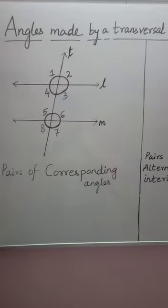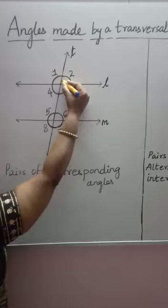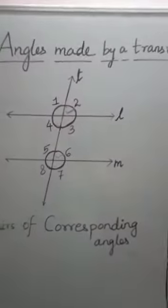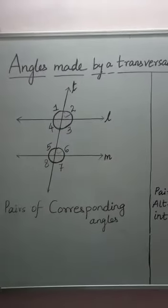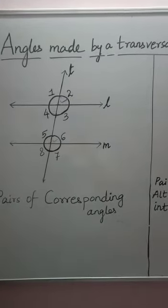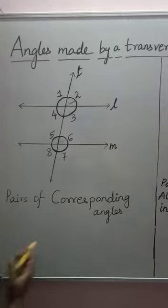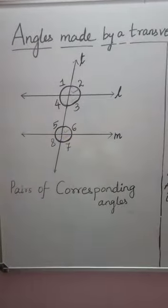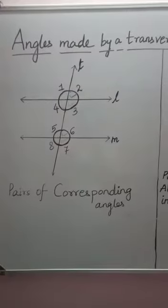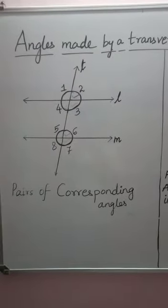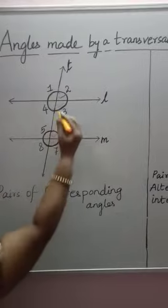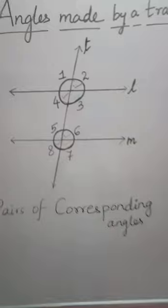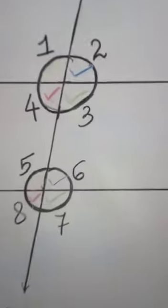The second pair of corresponding angles are angle 2 and angle 6. The next pair, relative to each other, are angle 3 and angle 7 — they are also forming a set of corresponding angles. And the last set is angle 4 and angle 8. So, you can see that there are 4 pairs of corresponding angles.